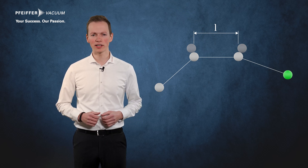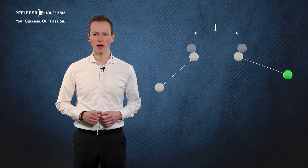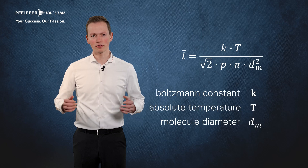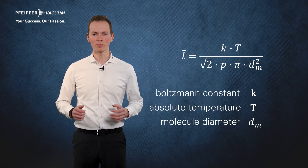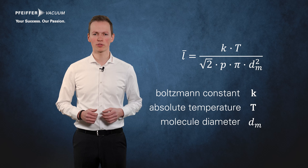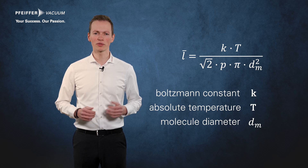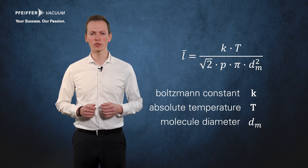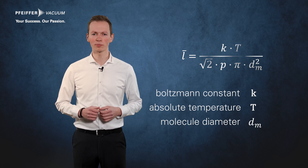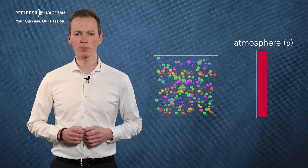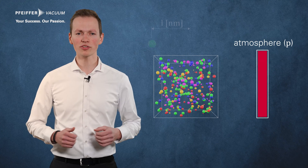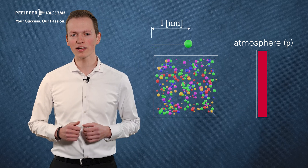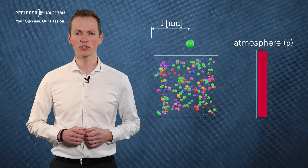You can easily calculate the mean free path with this equation. From this equation it can be seen that the mean free path displays linear proportionality to the temperature and inverse proportionality to the pressure and molecular diameter. At atmospheric pressure, a nitrogen molecule therefore travels a distance of 59 nanometers between two collisions.